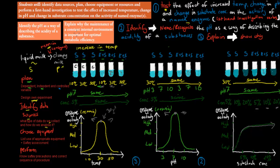I'm also going to cover the second dot point, which uses the verb 'identify', meaning name or recognize. pH is a way of describing the acidity of a substance. A pH of 7 means neutral; less than 7 means acidic; anything above 7 is basic. That's basically the extent of what you need to know from that dot point.